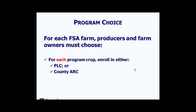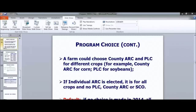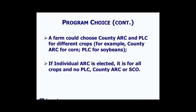It is possible that a farm could choose County ARC and PLC for different crops — for example, County ARC for corn and PLC for soybeans. However, if the Individual ARC program is elected, it is for all of the crops; you cannot mix and match Individual ARC with any other programs. Also, if you elect County ARC on any crop, it's not eligible for the SCO program. If you elect Individual ARC, you also are not eligible for SCO.